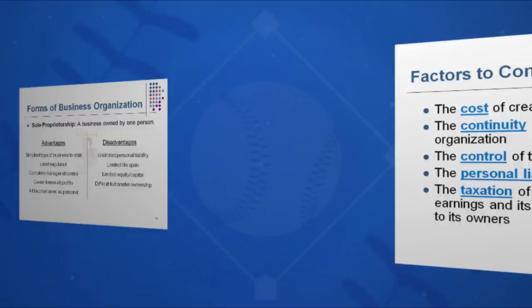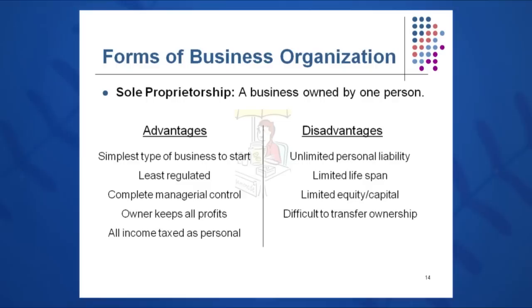In the sole proprietorship, some of the advantages are that it's very simple to form. You can basically use your social security number and start a sole proprietorship, and your income gets taxed along with your personal income. It's not very regulated — just get a business license, go downtown and start your business.